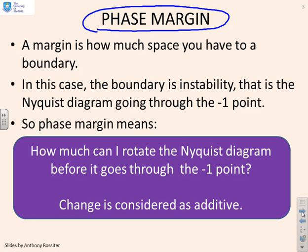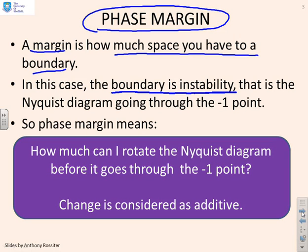What is a margin? A margin is how much space you have to a boundary. Because we're talking about feedback loops and Nyquist diagrams, what we're actually interested in is a boundary to instability. What you'll remember is that if the Nyquist diagram goes the wrong side of the minus 1 point, you're going to be closed loop unstable. So the phase margin tells us what's the gap before we go closed loop unstable.